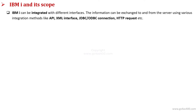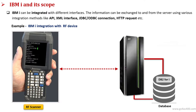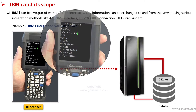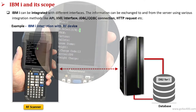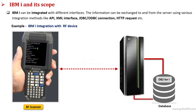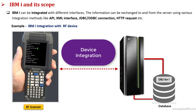IBM i can be integrated with different interfaces. Information can be exchanged to and from the server using various integration methods like API, XML interface, JDBC or ODBC connection, HTTP request, etc. For example, it can be integrated with RF scanner devices used in warehouse management systems. RF devices are used to scan and pick items from specified locations in the warehouse. Once an item is scanned and the picking process is confirmed, the inventory value is adjusted in the database and all files related to the order are updated. The scanner device is integrated with IBM i database using integration methods like API or JDBC/ODBC connection.